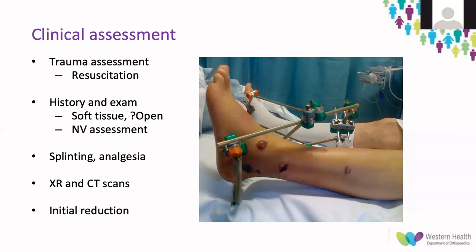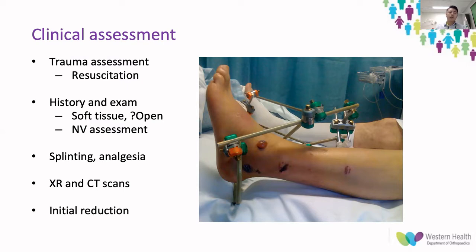A thorough examination needs to be performed, particularly looking at the surrounding soft tissue around the ankle joint, as well as the joint above and below. As these are associated with open injuries, these need to be looked for, and early antibiotics and tetanus provided if the wound is open. Neurovascular assessment must be done, and although rarer for this fracture pattern, assessment for compartment syndrome is also required. The patient should then be splinted, and orthogonal x-rays and CT obtained.